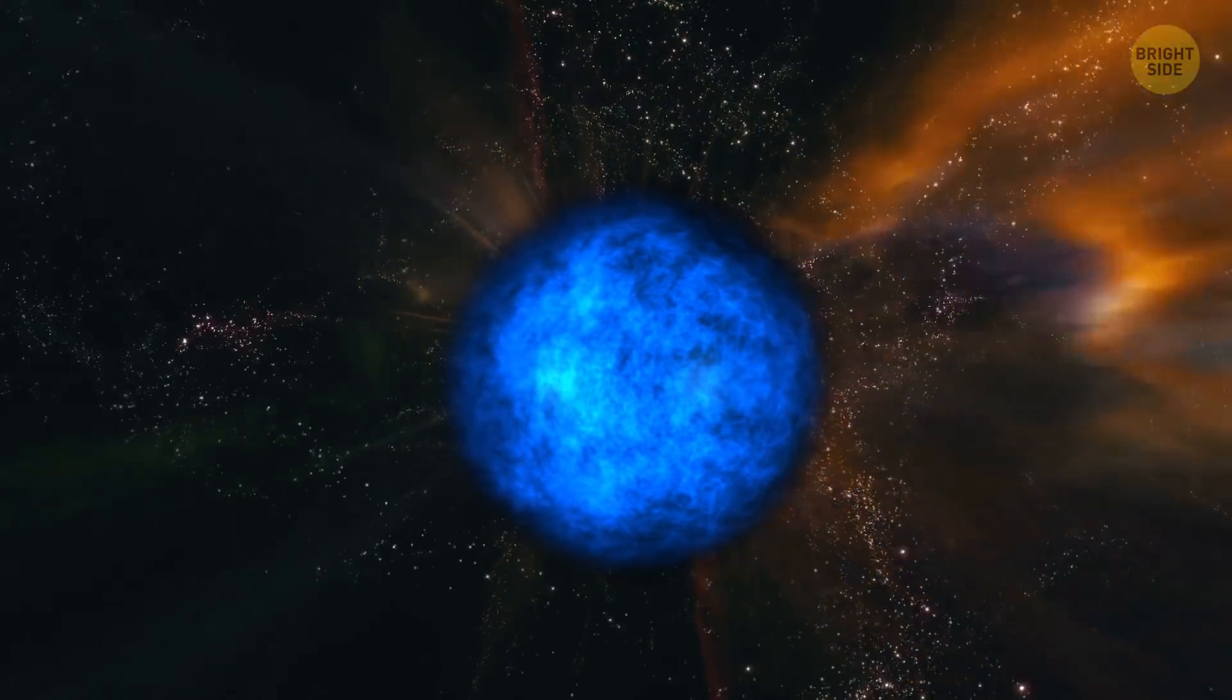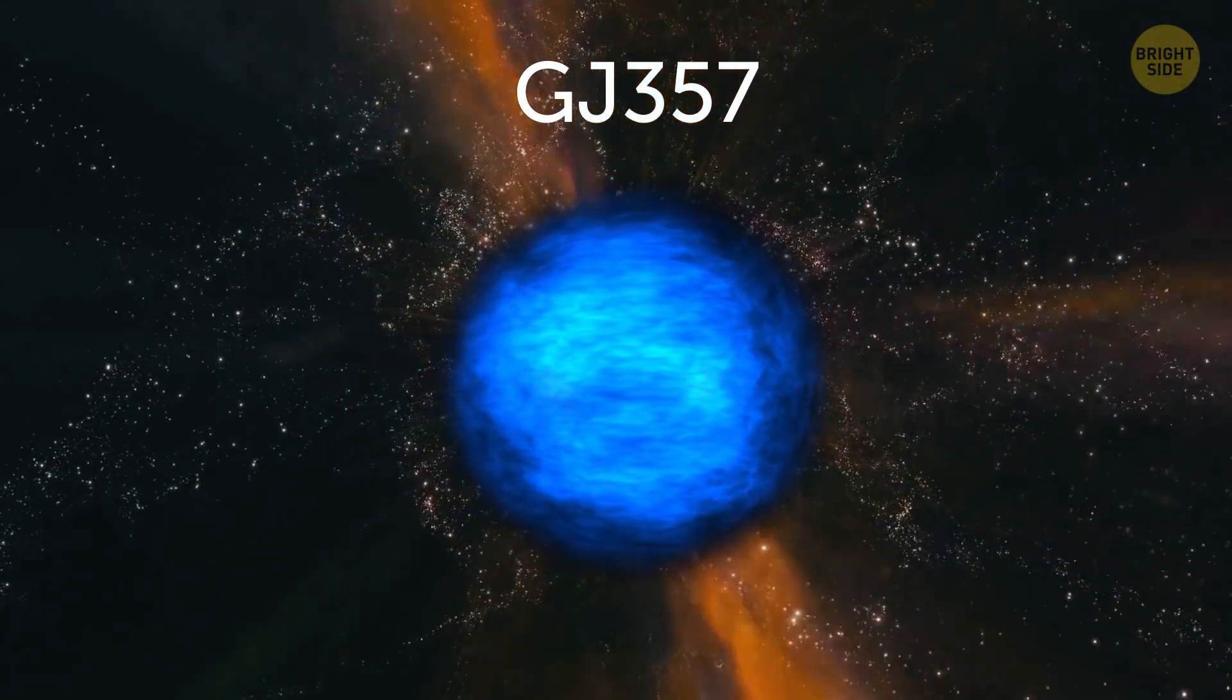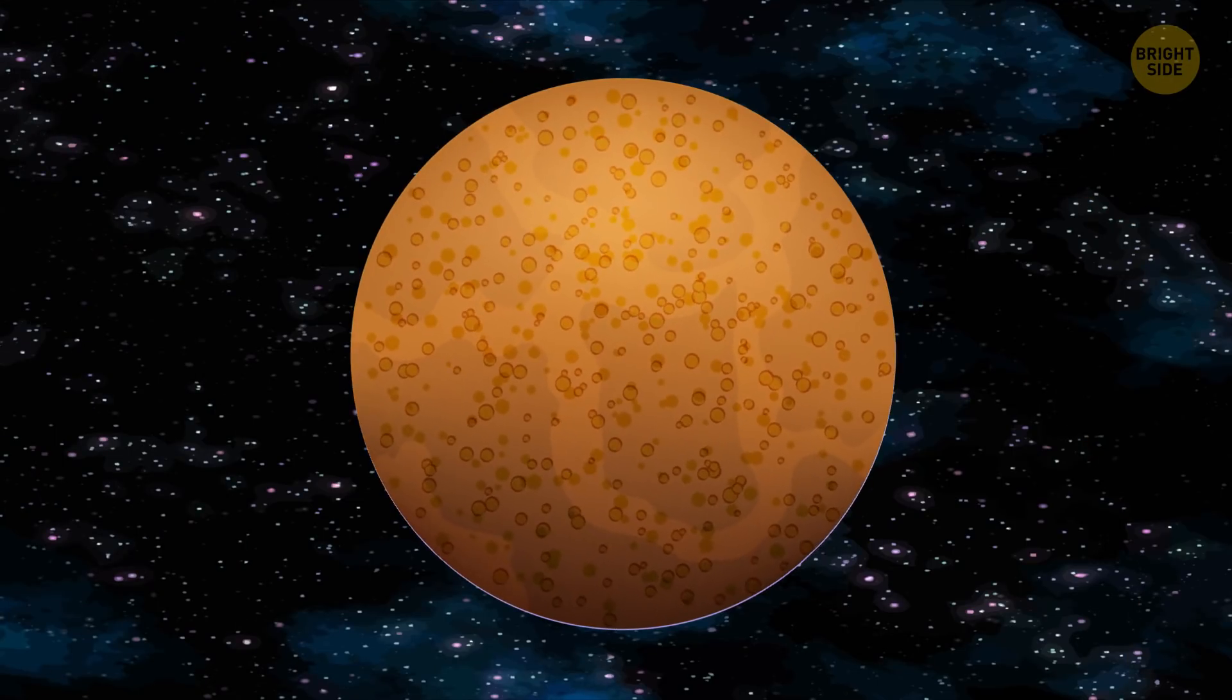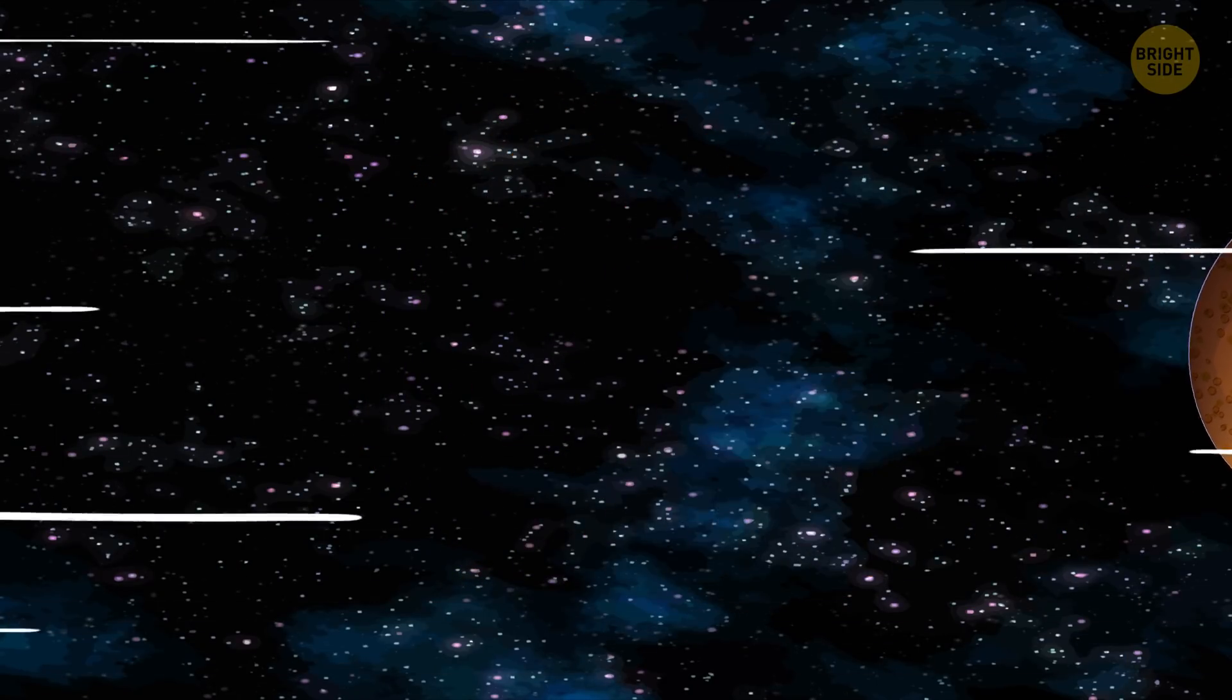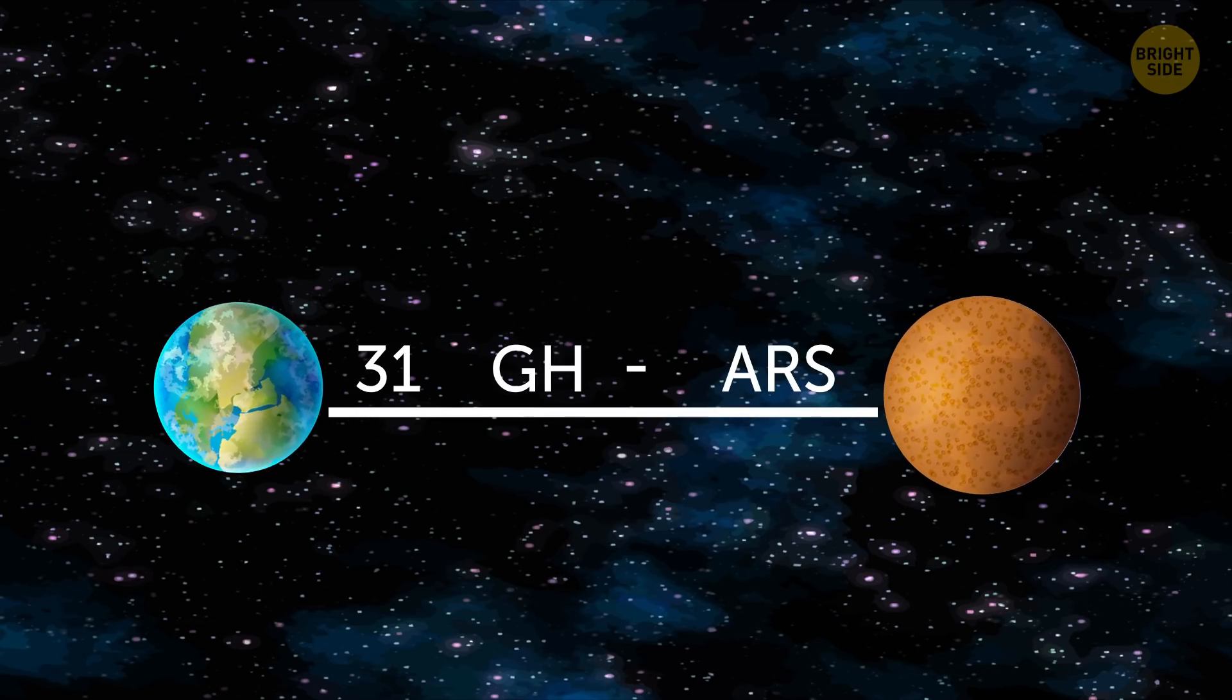One of these stars is the comparatively small GJ357. Catchy name, I know. Nearby is a relative term in space, since GJ357 is about 31 light-years from Earth.